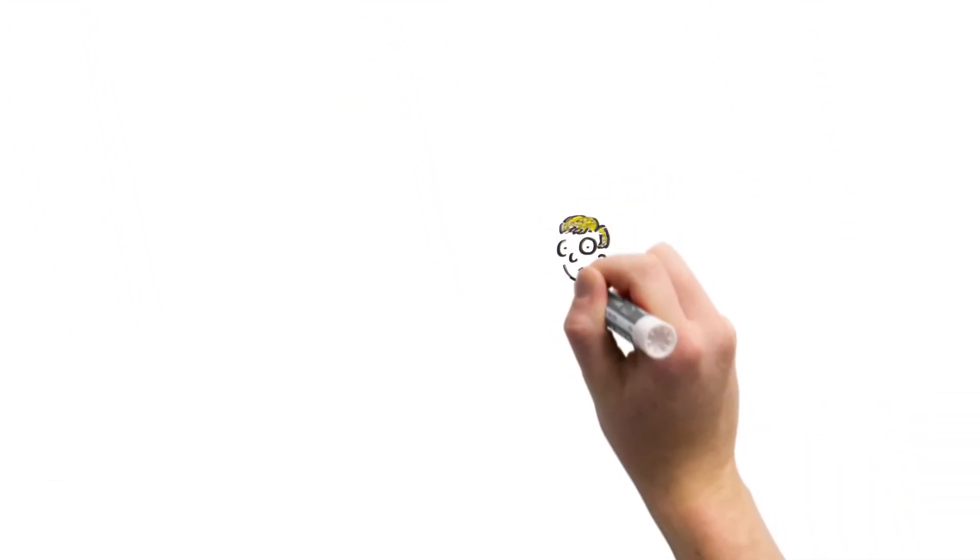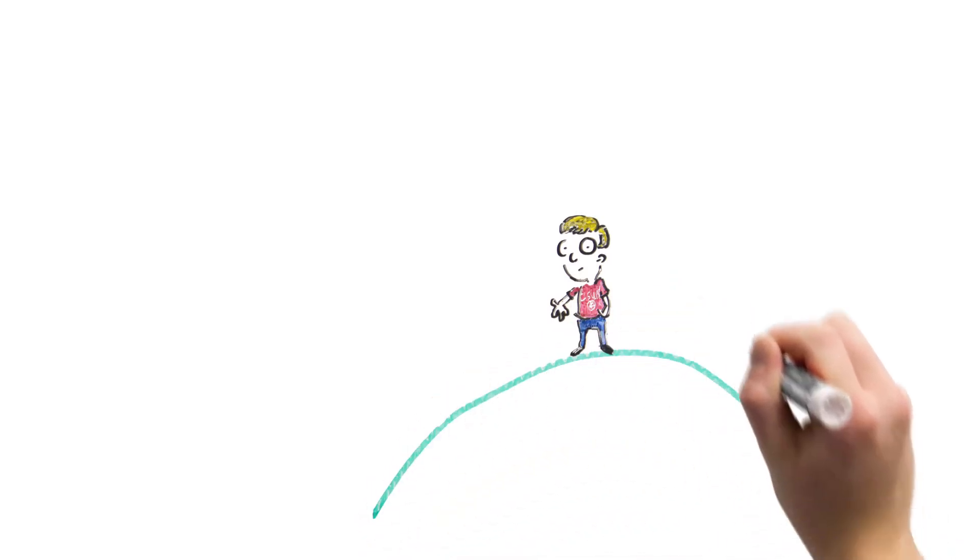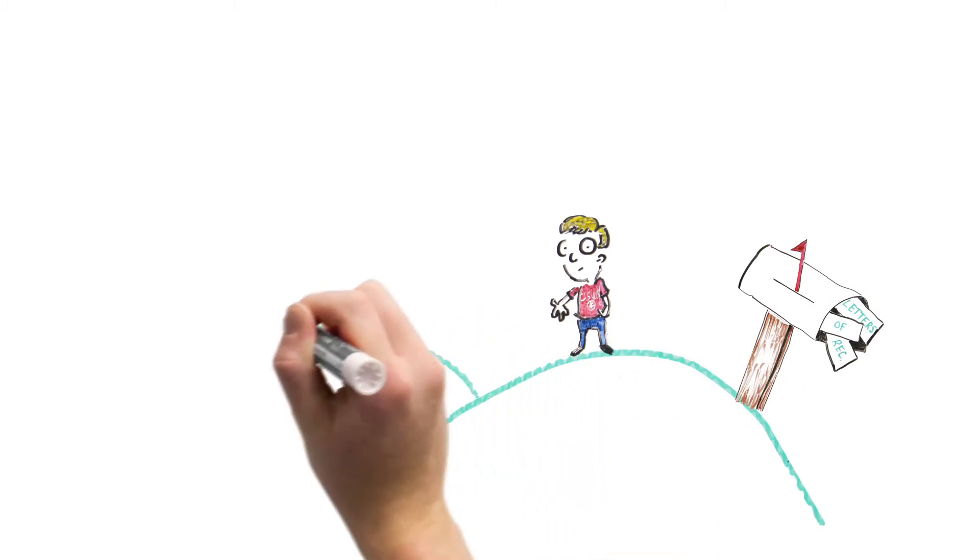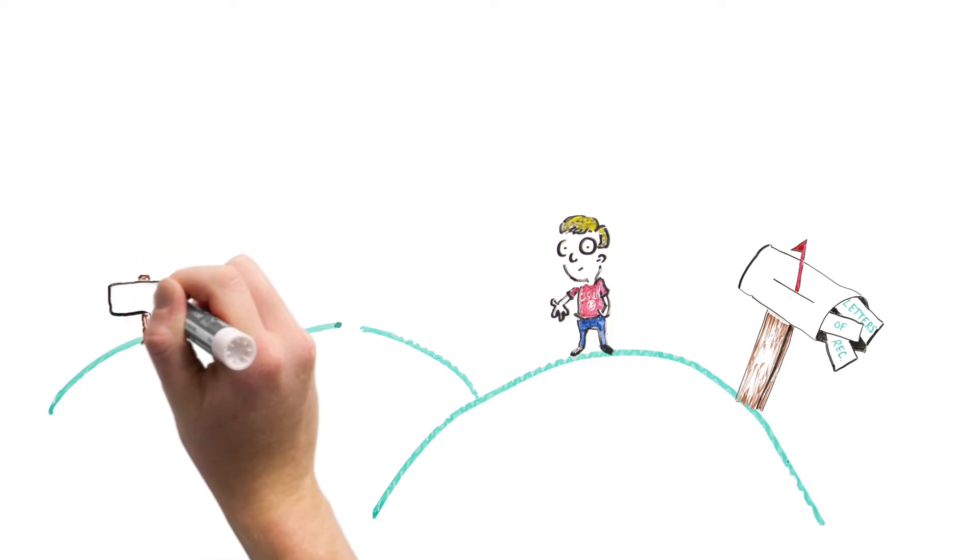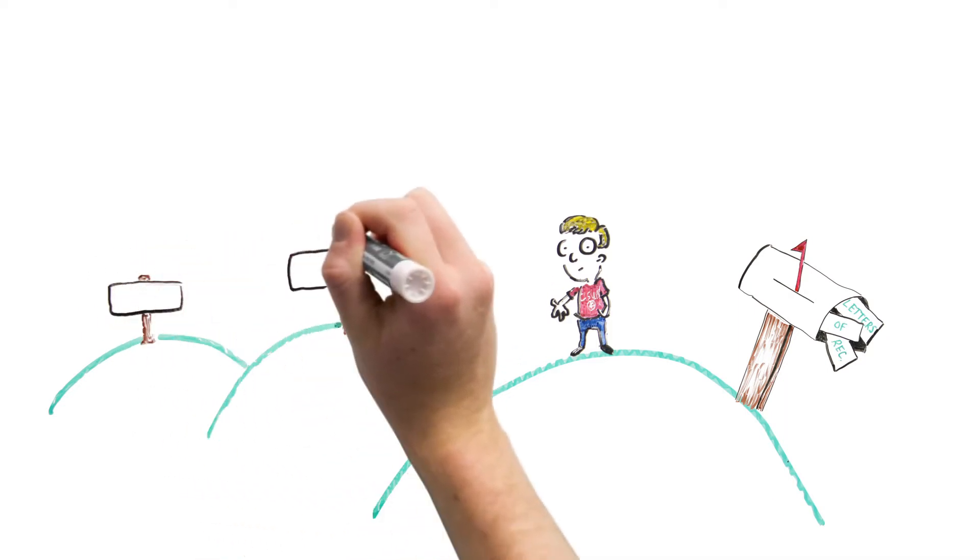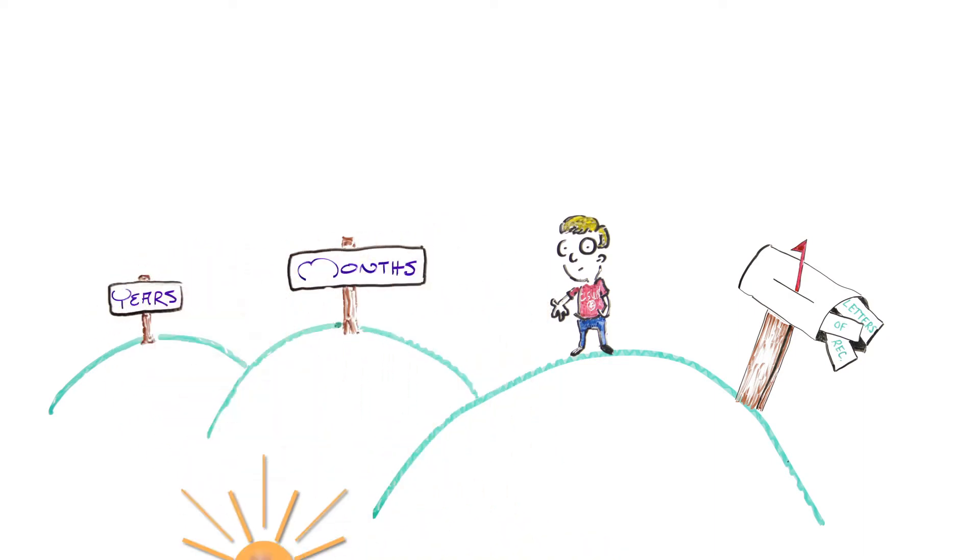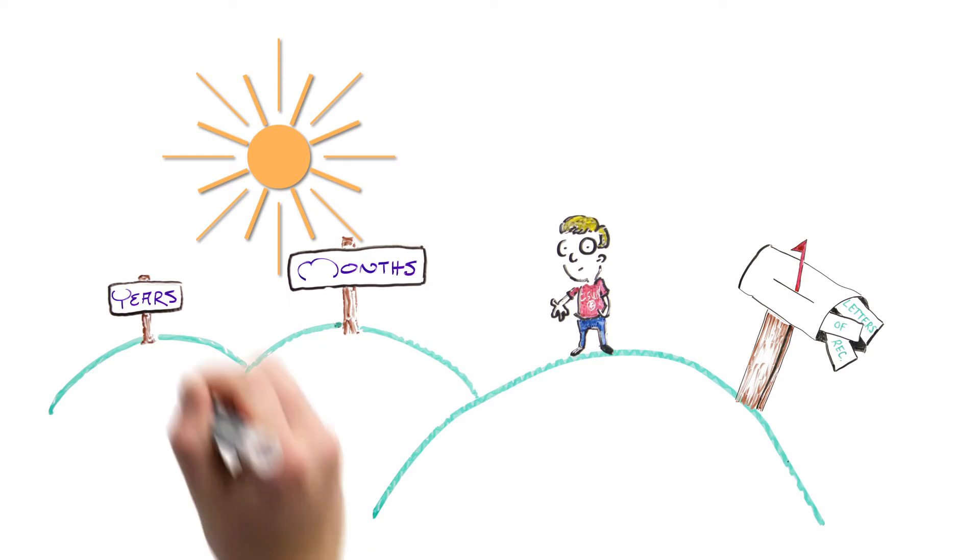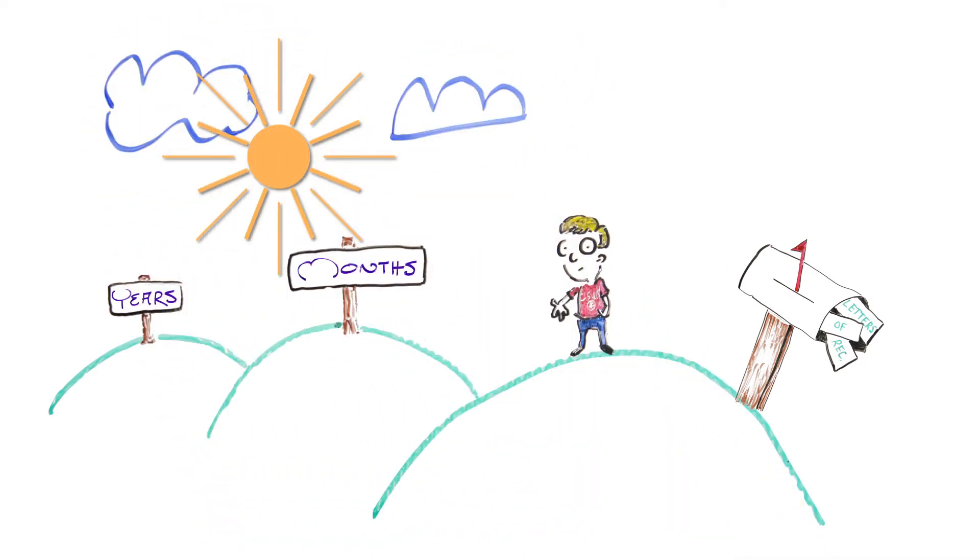Start early. Most deadlines to apply are at least a year in advance of your start date. The application process can take a while to complete and generally requires letters of recommendation, and that takes time. Some fellowships or research opportunities have rolling deadlines, and applying early gives you a huge advantage when being considered for the position. Usually you need to apply months or even a year in advance before receiving a first response. So plan ahead and be prepared for a long process.